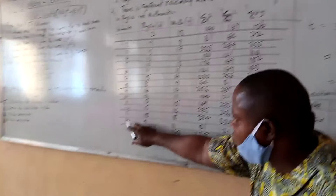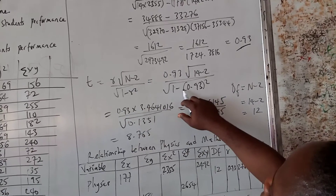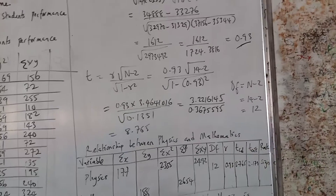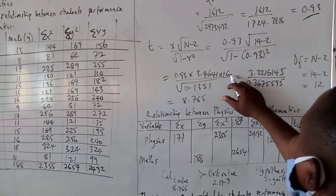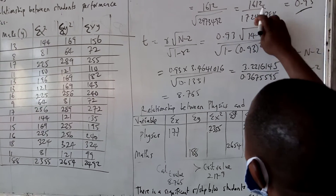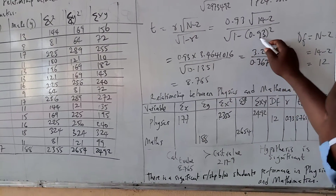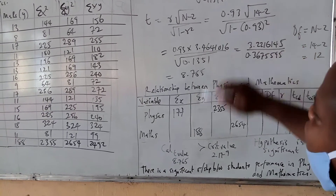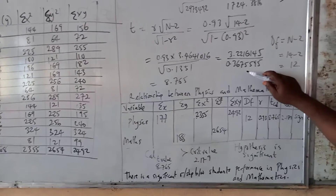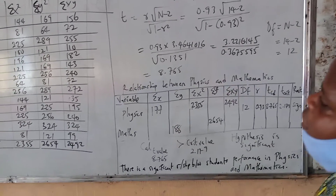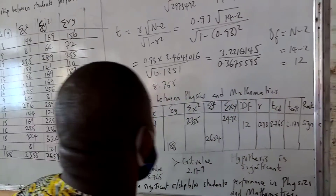There are 14 students, so n is 14. We compute: t equals 0.93 times the square root of 14 minus 2, all over the square root of 1 minus 0.93 squared. The square root of 12 is 3.4641016, multiplied by 0.93. We square 0.93 and subtract from 1, giving 0.1351. Taking the square root of that and dividing gives a calculated t-value of 8.765.